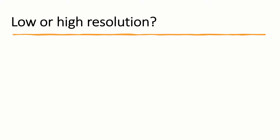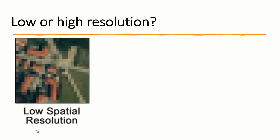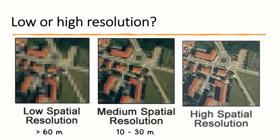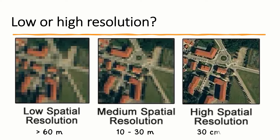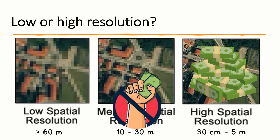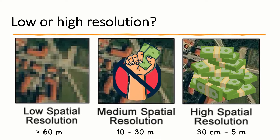Generally, a low spatial resolution is over 60 meters per pixel. A medium resolution is between 10 and 30 meters, whilst a high to very high resolution is 30 centimeters to 5 meters. The latter is provided by very high resolution commercial satellites, and hence are expensive to purchase. Medium resolution images from the European Space Agency are available free of charge.